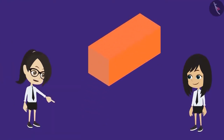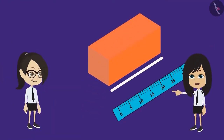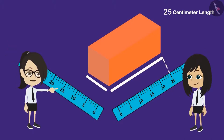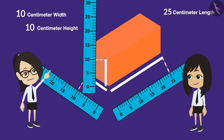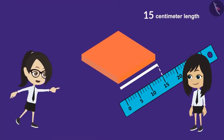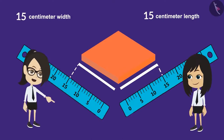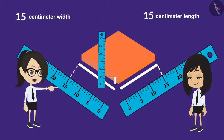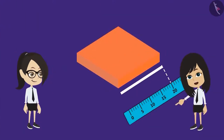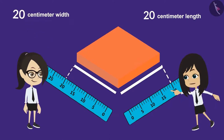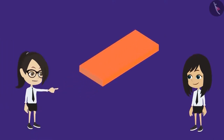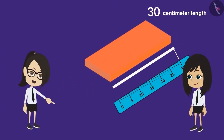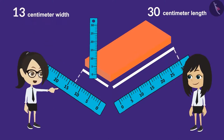They continue measuring the remaining bricks. The third brick is 15 cm long, 15 cm wide — the same as its length — and 5 cm tall. The fourth brick is 20 cm long, 20 cm wide, and 5 cm tall. The fifth and longest brick measures 30 cm in length, 13 cm in breadth, and 5 cm in height.